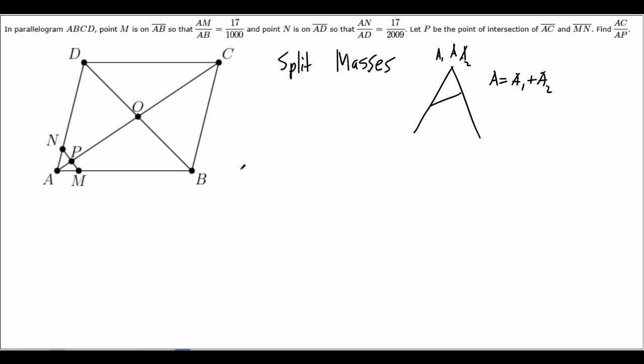Since AM over AB is 17 over 1000, we can probably make AM 17, and we can probably make MB 983. No one's gonna kill us. And AN over AD is 17 over 2000, so this is 17, and this will be 1992.